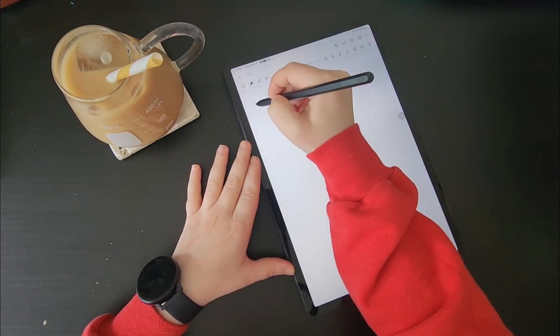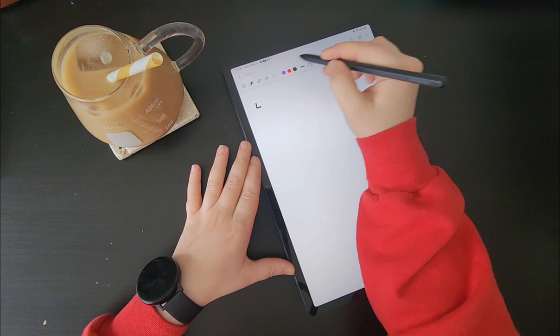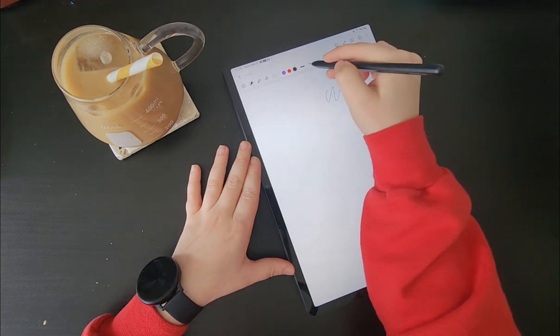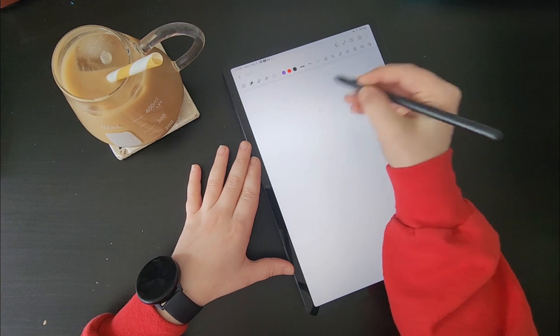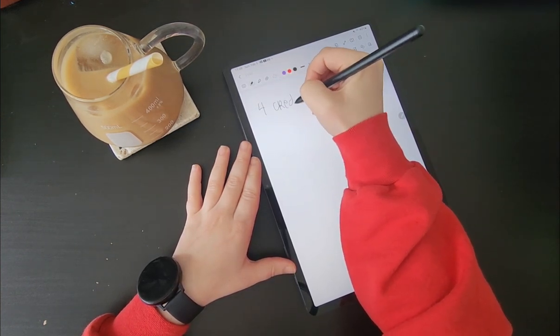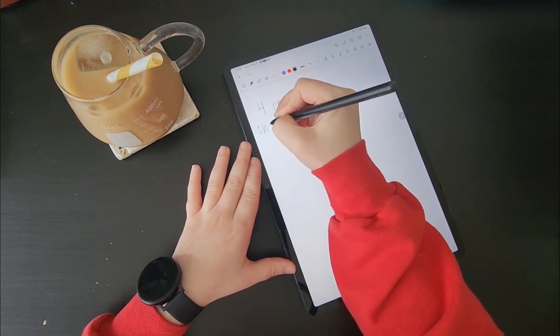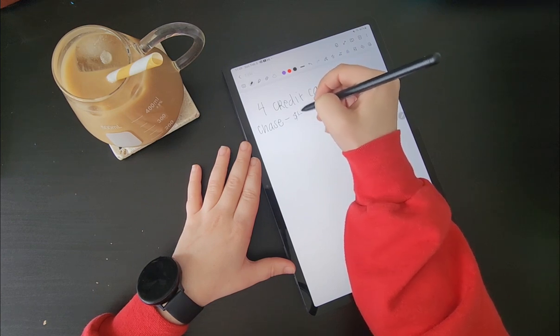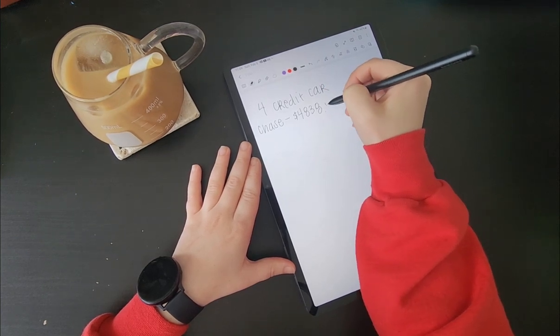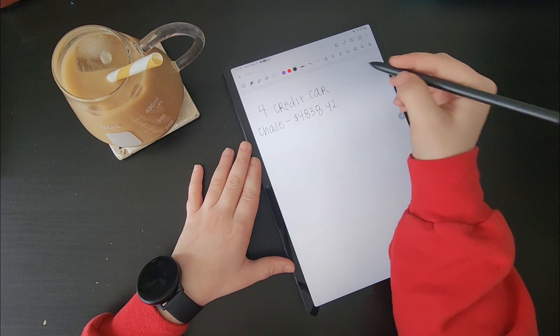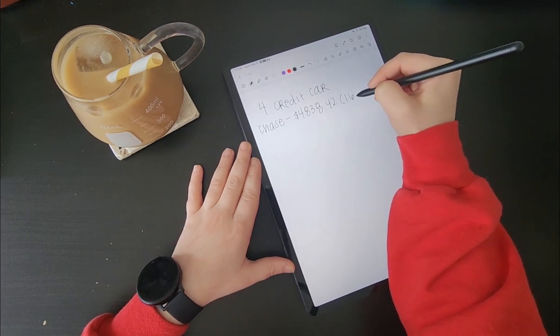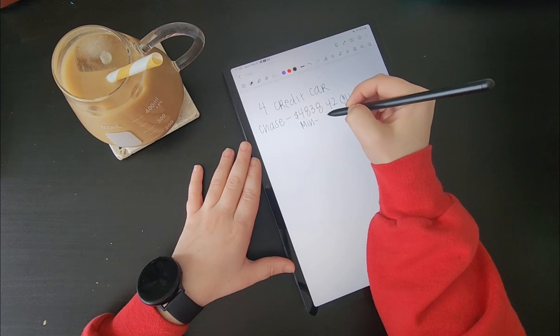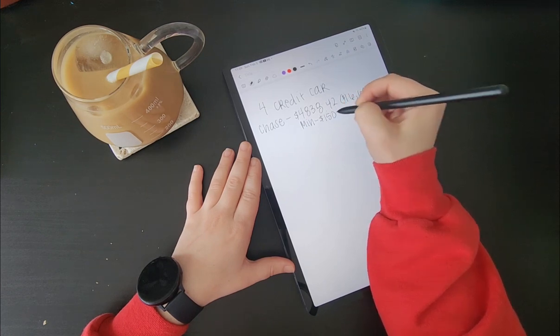So I have four credit cards. I have a credit card through my bank, Chase. And that current balance is $4,838.42. And I have a maximum credit line of $16,600. My minimum payment for this credit card is $150 per month.